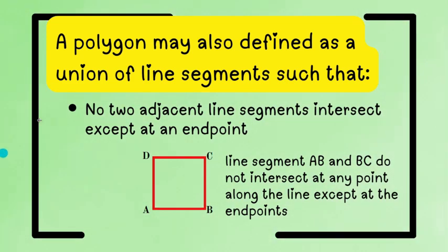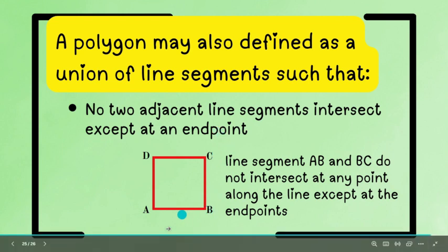What else? We can also define polygon as a union of line segments such that walang two adjacent line segments that intersect except at an endpoint. So, halimbawa, ang line AB at saka CB or BC, walang ibang point along this line na pwede sila mag-intersect except dito lang sa B. Kasi magkaibang direction nila. So, they can never meet except dito lang sa point of intersection.